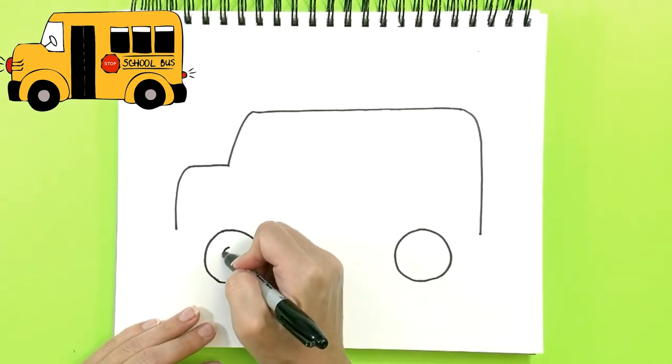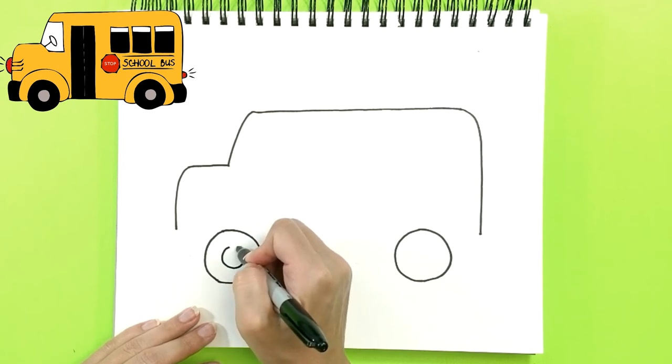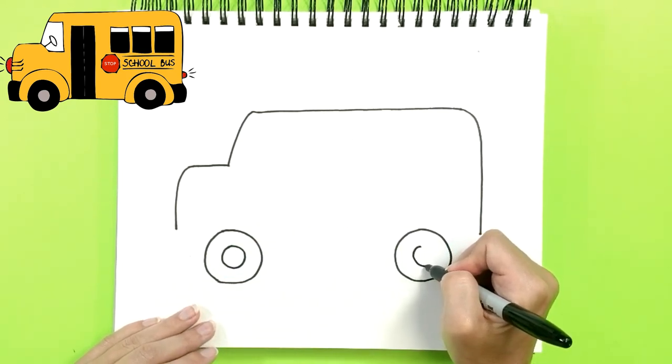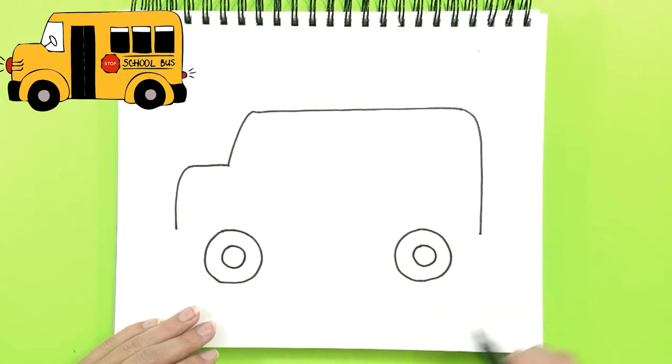Two more circles in the middle, so you can see the tires. And one more. There you go.